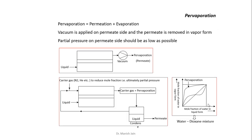One important aspect of this process is that it is generally used to separate a minute amount of liquid solute present in the mixture. This process cannot be used to separate a large amount of a component. Why? Because vaporization occurs at the permeate side — if you want to separate a compound present at 0.5 mole fraction, that amount has to be vaporized, requiring the latent heat of vaporization, which comes from the liquid side. As a result, the temperature of the feed mixture will drop.